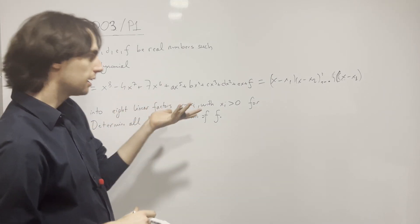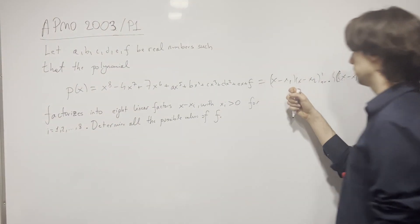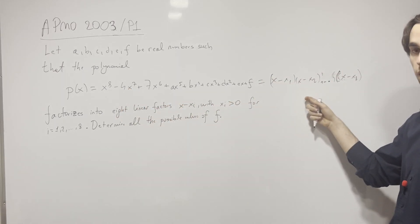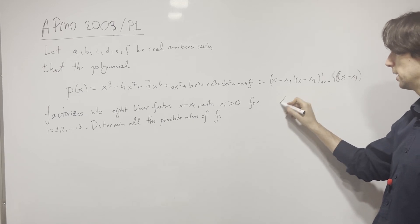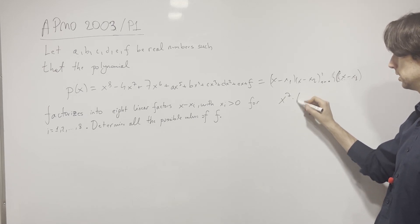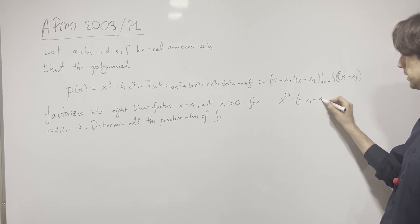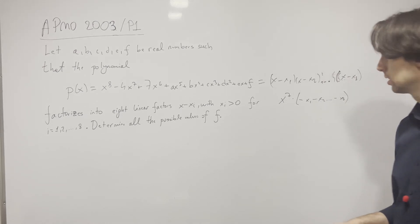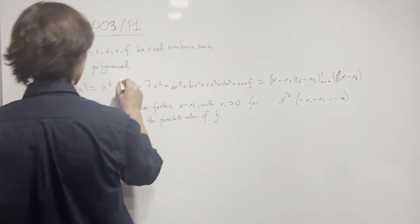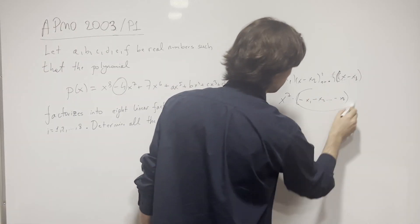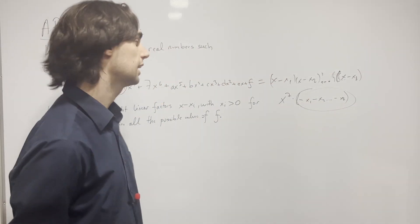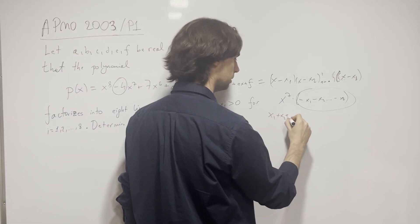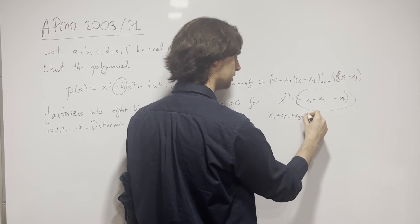Well, we know by Vieta's rules that the coefficient next to x^7 is going to be -x1 - x2 - ... - x8. So we have -4 equals the negative sum of the xi, so we know that x1 + x2 + ... + x8 = 4.